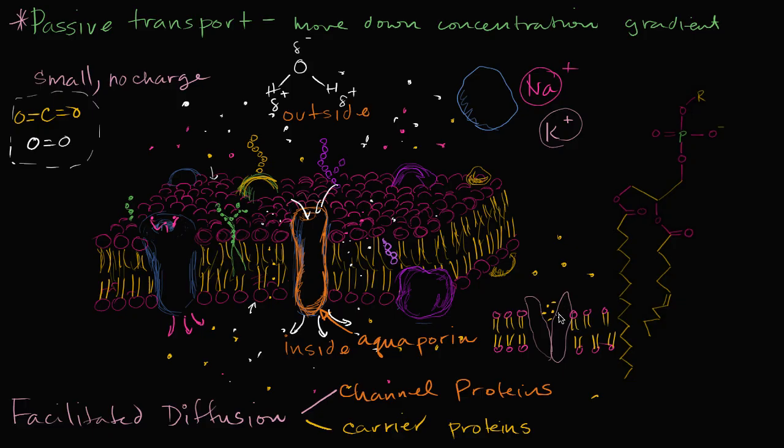And then that would trigger the carrier protein to change its shape, so that, and let me see if I can draw its change shape well. So it could change its shape, so this is when it's taking stuff from above, and then when it sees that, hey, I've got stuff here, it can change its shape to look something like this. So it could kind of flip around.